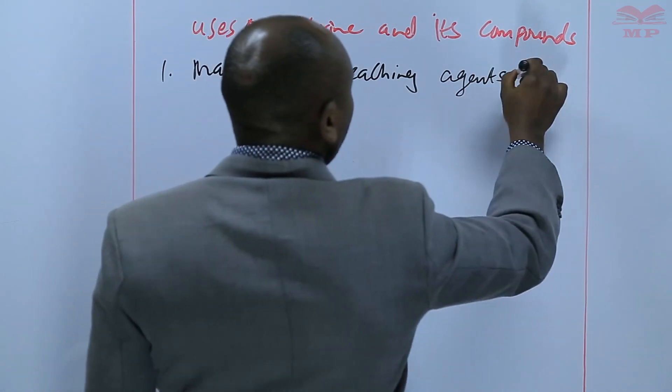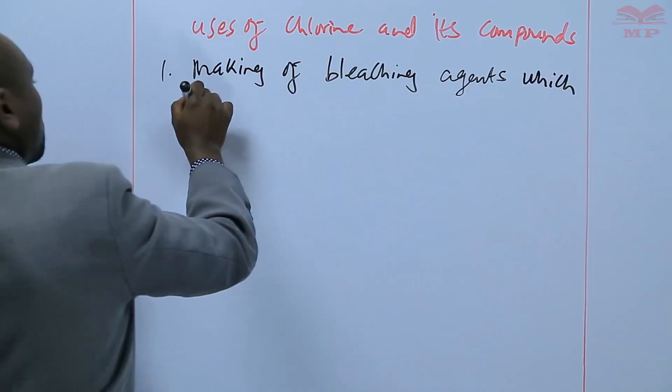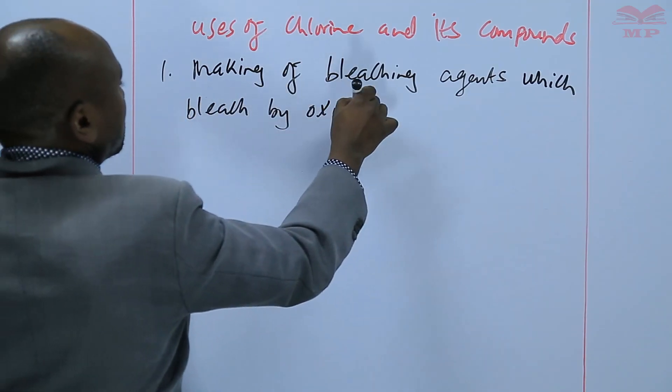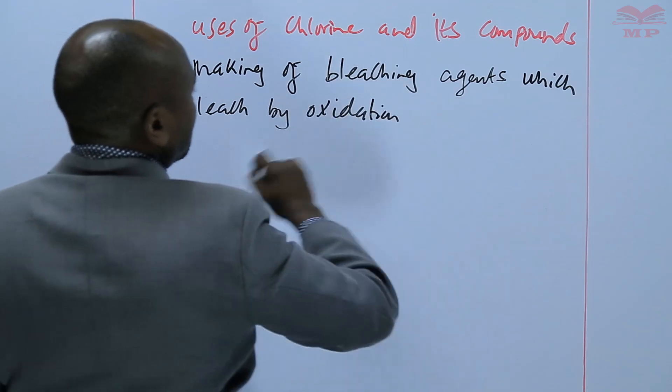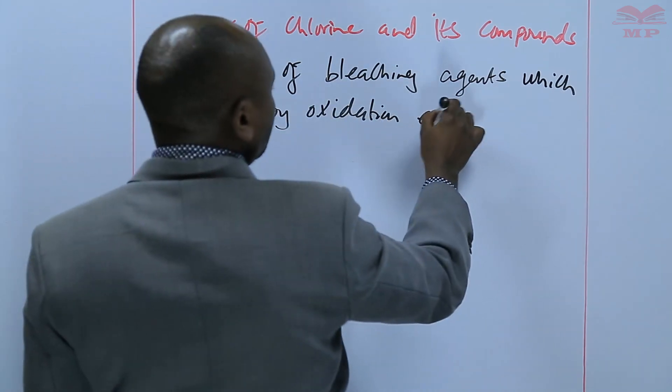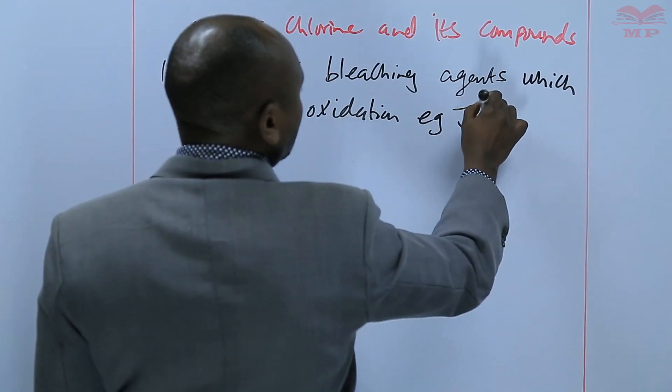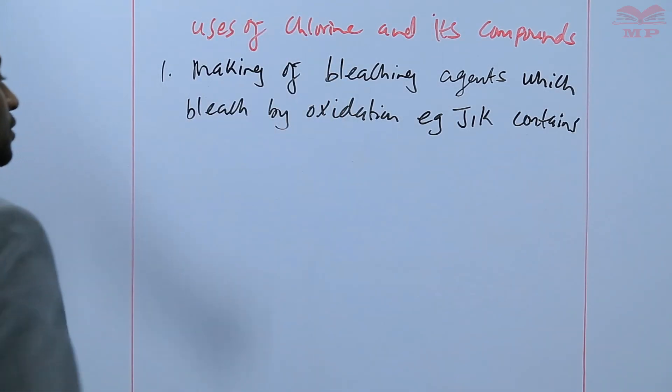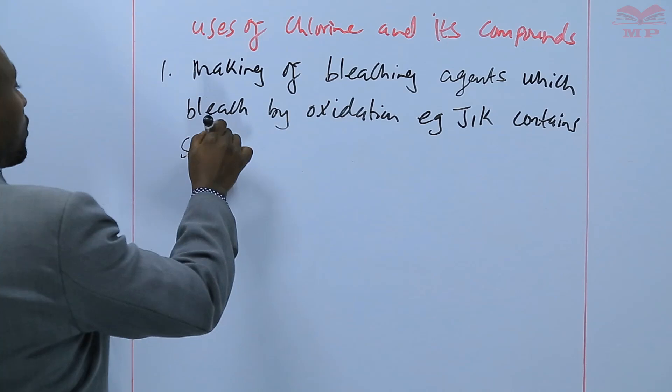For example, GIC contains sodium hypochlorite, which is a compound of chlorine and bleaches by oxidation.